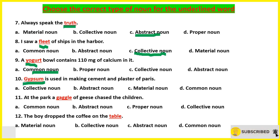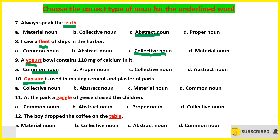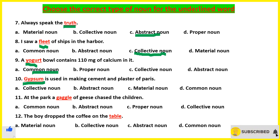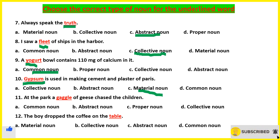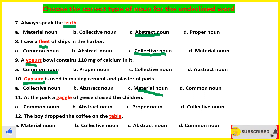'Gypsum is used in making cement and plaster of Paris.' Now, gypsum — can it be a collective noun? No, because we are not talking about any collection. We are not talking about any quality. We are talking about the name of a material, so it will be material noun.